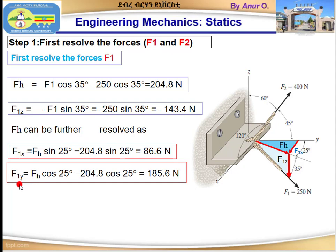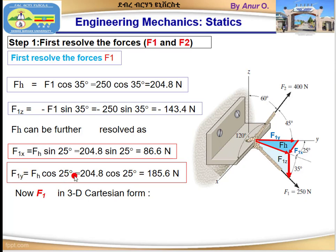Next, F1y is the y-component of Fh. Since F1y is adjacent to the 25-degree angle, we use cosine: F1y equals Fh cos 25 degrees. Substituting Fh = 204.8 N gives F1y = 185.6 N.